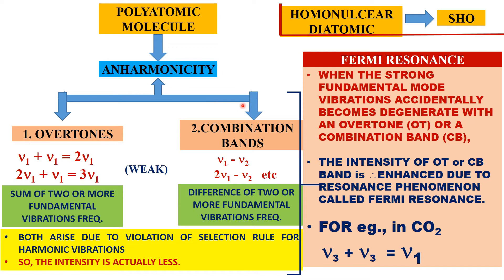As a result, due to this anharmonicity, there are two or more additional bands. They are called overtones and combination bands. In addition to normal modes of vibrations, there are overtones and combination bands.